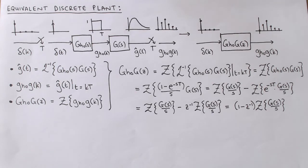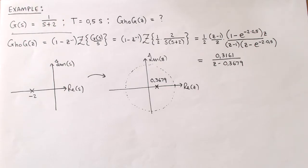There is one important difference: the previous discretization methods were approximate, whereas the equivalent discrete plant model we calculate here is exact. To illustrate the discretization of the continuous plant, let's work through a simple example.